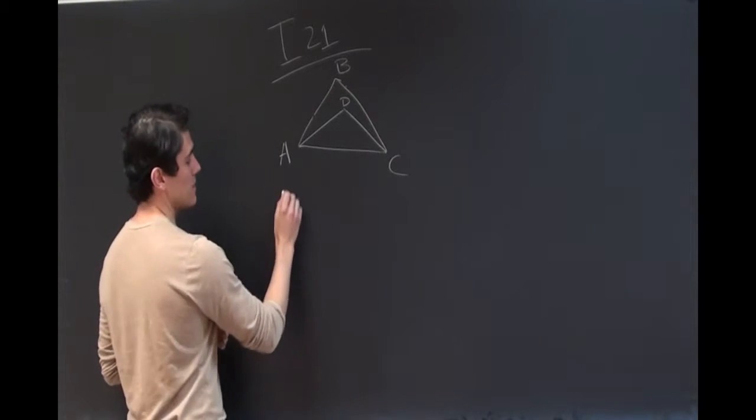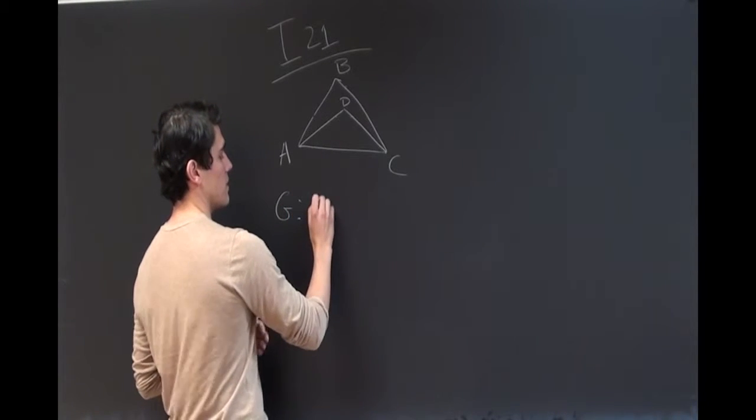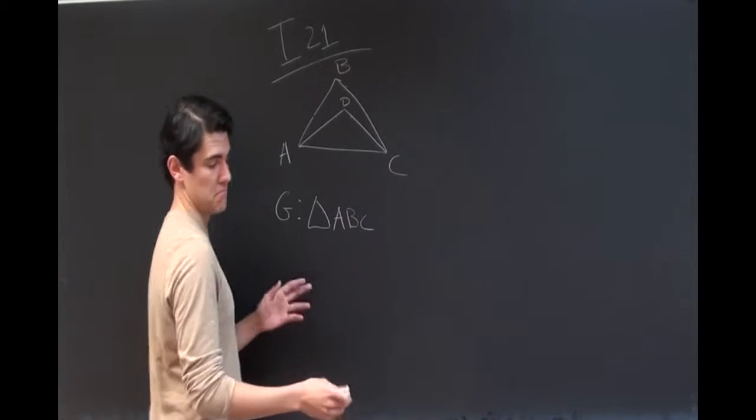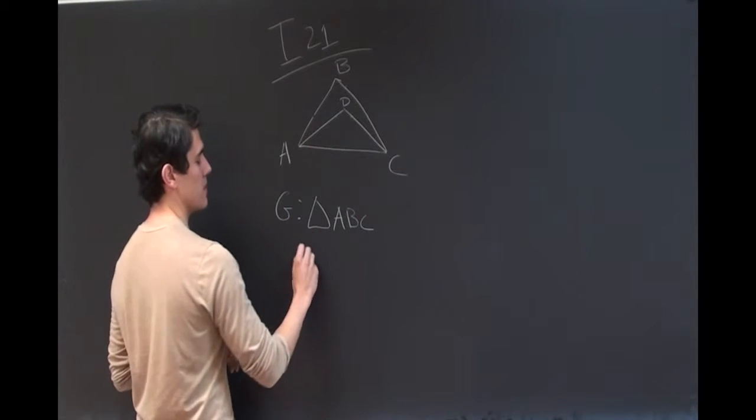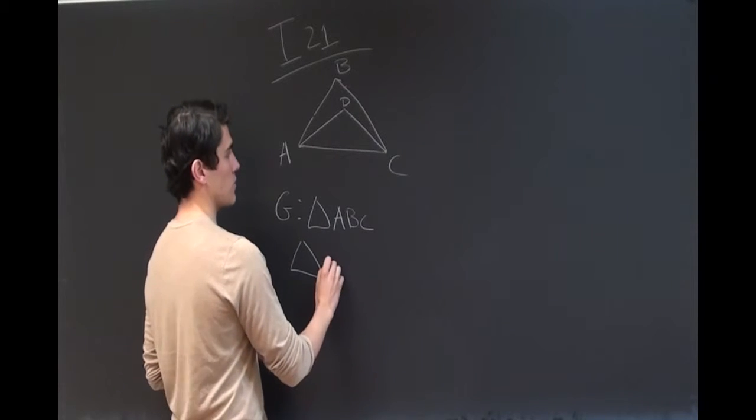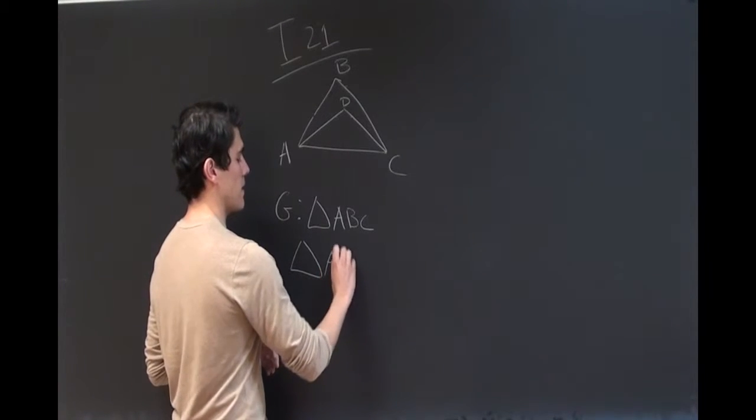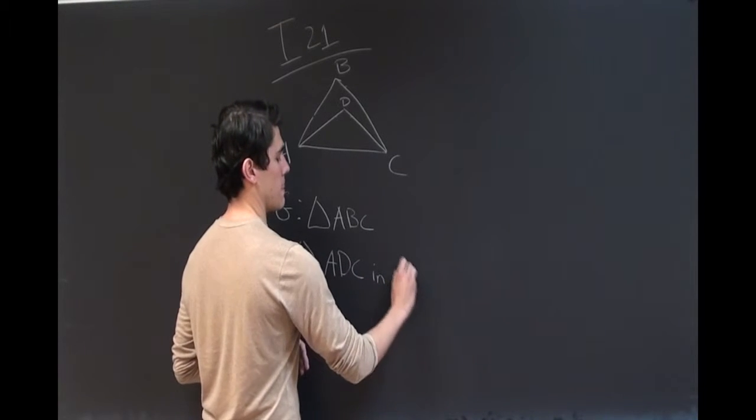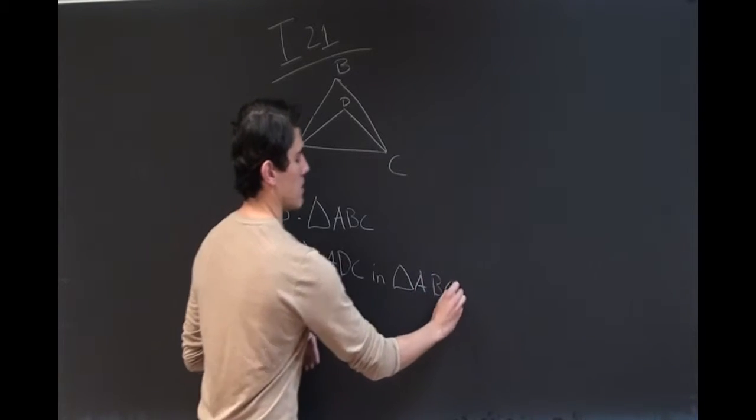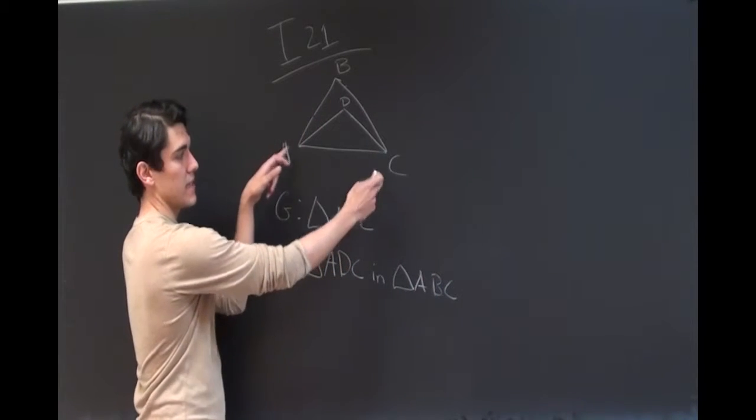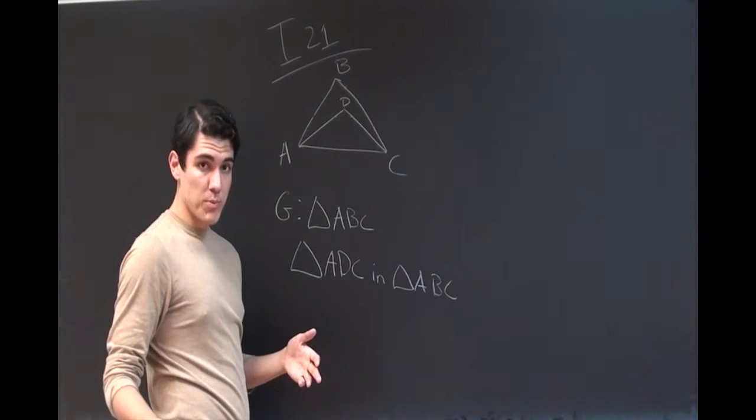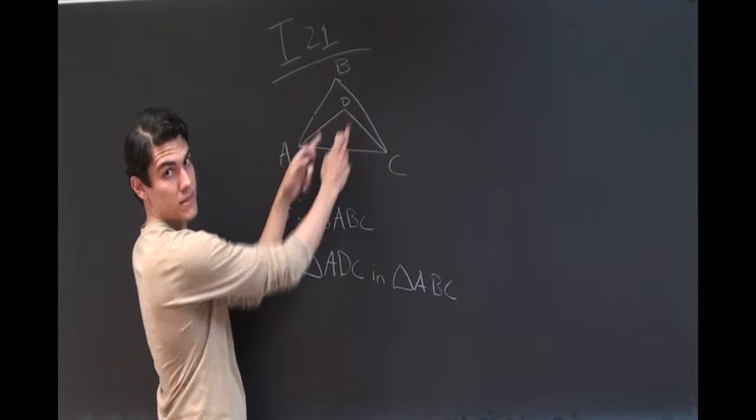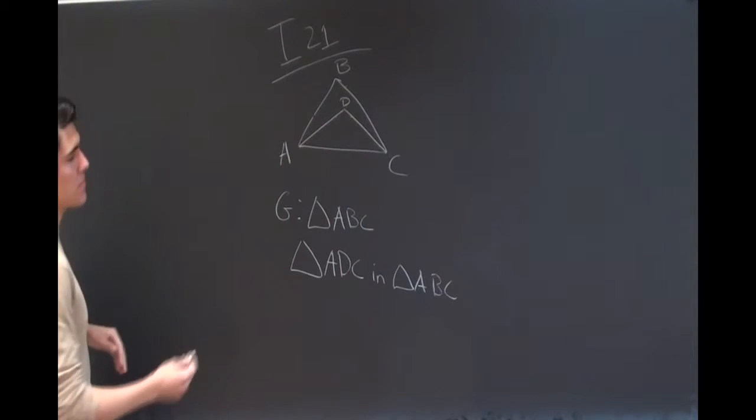So, we're given triangle ABC, triangle ABC right there. So, we're going to do the first part of the proof, and that is that these two lines added together are shorter than these two lines added together. So, let's start over here, step one.